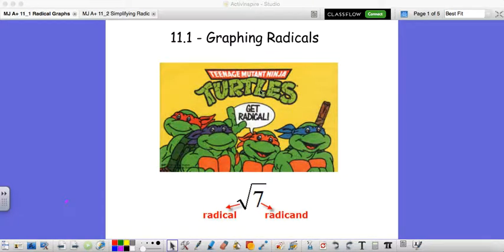Okay, so to start chapter 11, we're going to talk about graphing radicals. And the first thing we need to ask is, well, what's a radical? A radical is just this. You've seen this as a square root before.